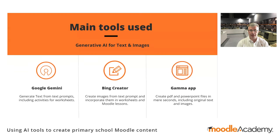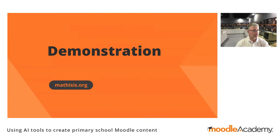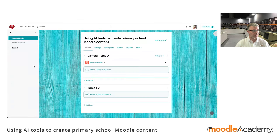For this presentation and for my work, I'm using mostly three tools. I'm using Google Gemini, which is quite similar to ChatGPT — it's from Google and can generate text. I'm using Bing Creator, which is based on DALL-E 3 for image generation, and one of the reasons I'm using this is because it offers 15 generations every day and it supports Greek, because I'm a Greek speaker in school. And I'm also using the Gamma App, which very easily creates presentations. Now I'm going to go directly to the Moodle site and we're going to create content.